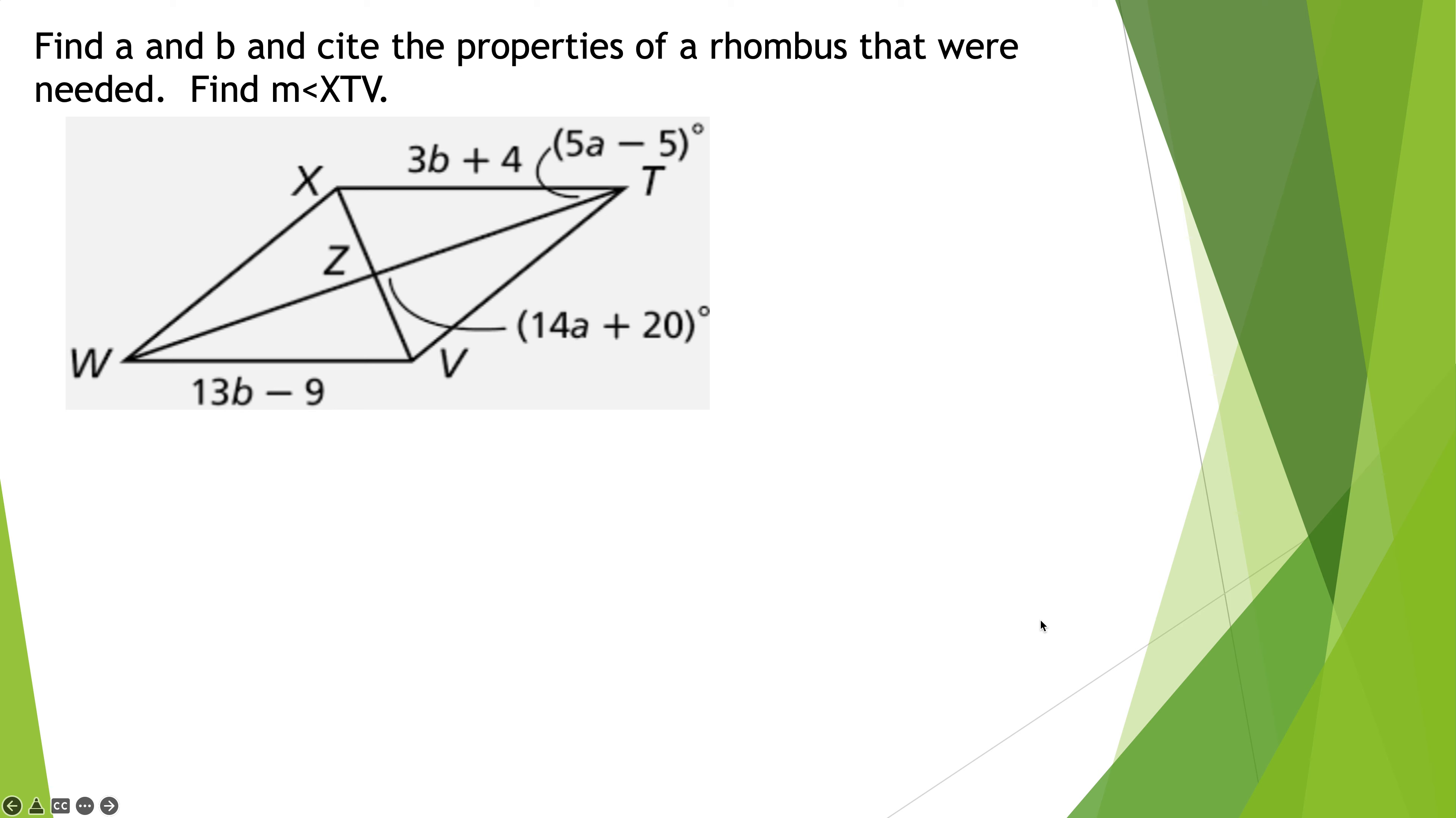Last rhombus one. Find A and B and cite the properties of the rhombus that were needed. Find the measure of angle X, T, V. Find A and to find B. So, let's actually start with B because the opposite sides are congruent. Remember, a rhombus has all the properties of a parallelogram. So, 3B plus 4 must equal 13B minus 9. Subtracting the 3B, I get 4 equals 10B minus 9. Adding 9 to both sides. 10B is 13. Dividing by 10, B is 1.3. There are no mistakes there. It is 1.3. Strange that they would make this question, but they did.